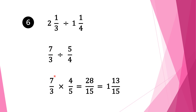We write down the first fraction 7 over 3, change the division sign into multiplication, and take the reciprocal of the second fraction. It is 5 over 4, so we write it down as 4 over 5. We check whether we can cancel anything — we can't cancel anything. So we multiply our numerators: 4 times 7 is 28, and our denominators: 5 times 3 is 15. Our solution is 28 over 15, but this is an improper fraction, so our final solution is 1 and 13 over 15.